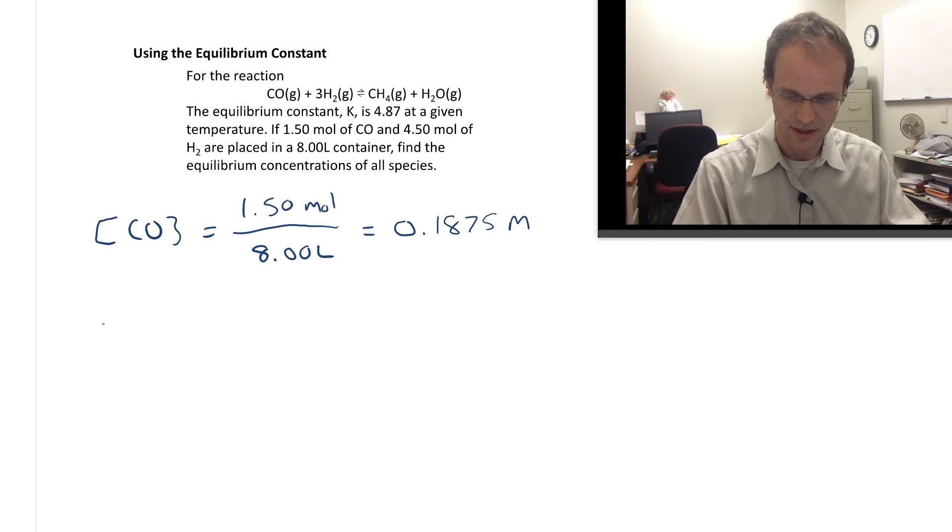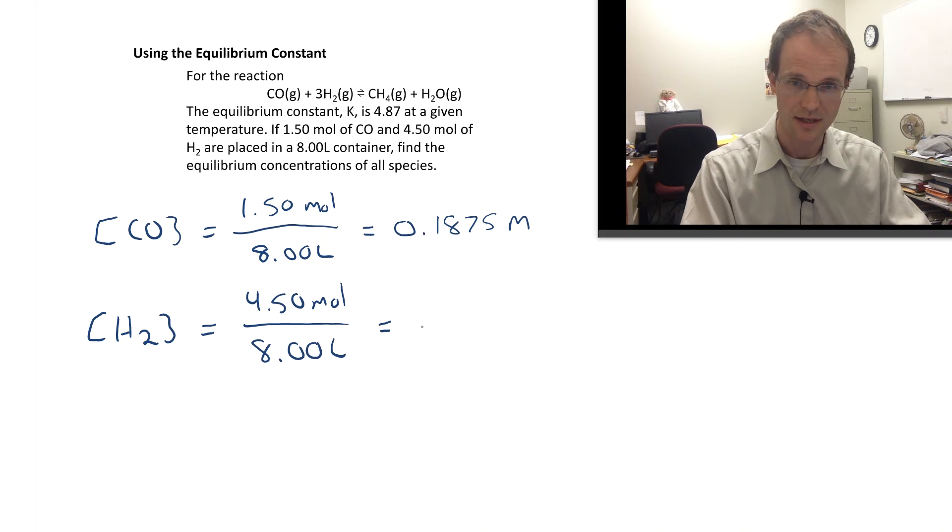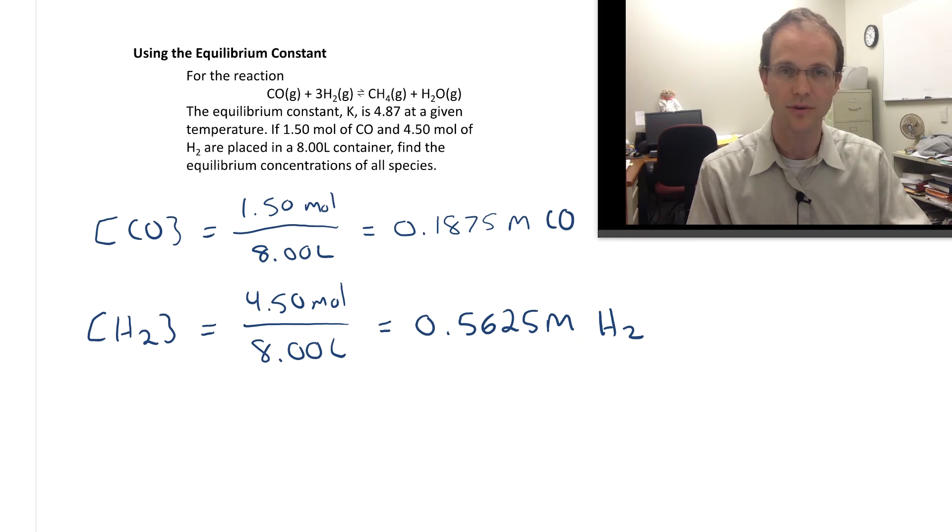We're going to find our initial concentration of H2, and that's going to be 4.50 moles also over 8.00 liters, and if you get that number it's 0.5625 molar H2 and molar CO. So now we have these initial concentrations. What are we going to do with them?